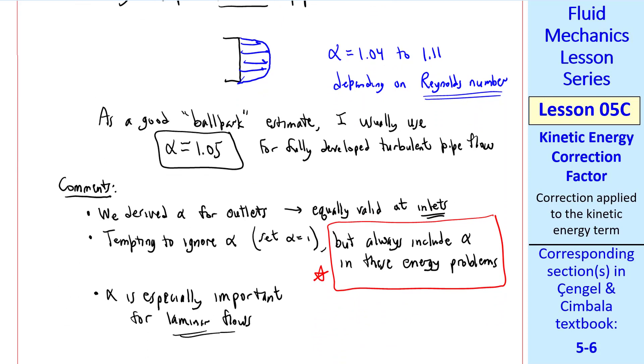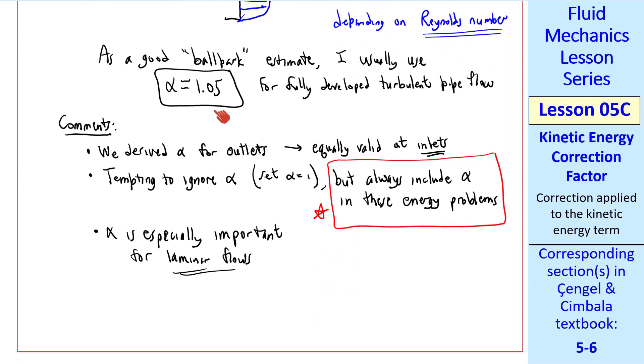α is especially important for laminar flows, where we found that α was 2 for fully developed laminar pipe flow. That 2 can make a big difference in your calculations. For turbulent flow, where α is about 1.05, it won't make that much of a difference. But again, always include it from now on in any energy problem that you do. This will make our solutions more accurate.